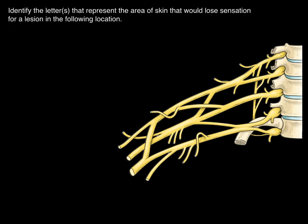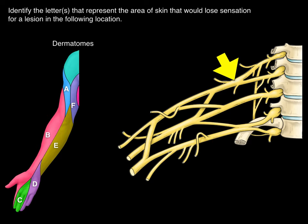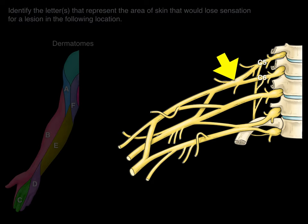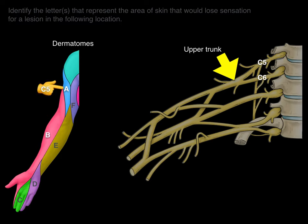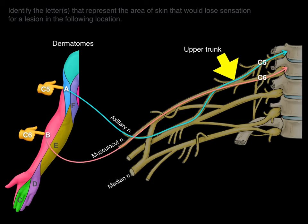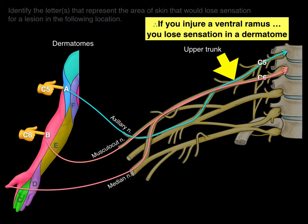Identify the letters representing the area of skin that would lose sensation for a lesion in the following location. There are the C5 and C6 roots of the brachial plexus, which make up the upper trunk. Therefore, both the C5 and C6 roots will not be able to receive sensation. The C5 dermatome is in A and the C6 dermatome is in B. The axillary nerve transmits sensory neurons from the lateral shoulder; the musculocutaneous nerve transports sensory neurons from the lateral forearm; the median nerve transports sensory neurons from the thumb. Basically, it's the C5 and C6 dermatomes that are affected because of the upper trunk injury. If you injure two ventral rami making up the upper trunk, you lose sensation in both of those dermatomes.